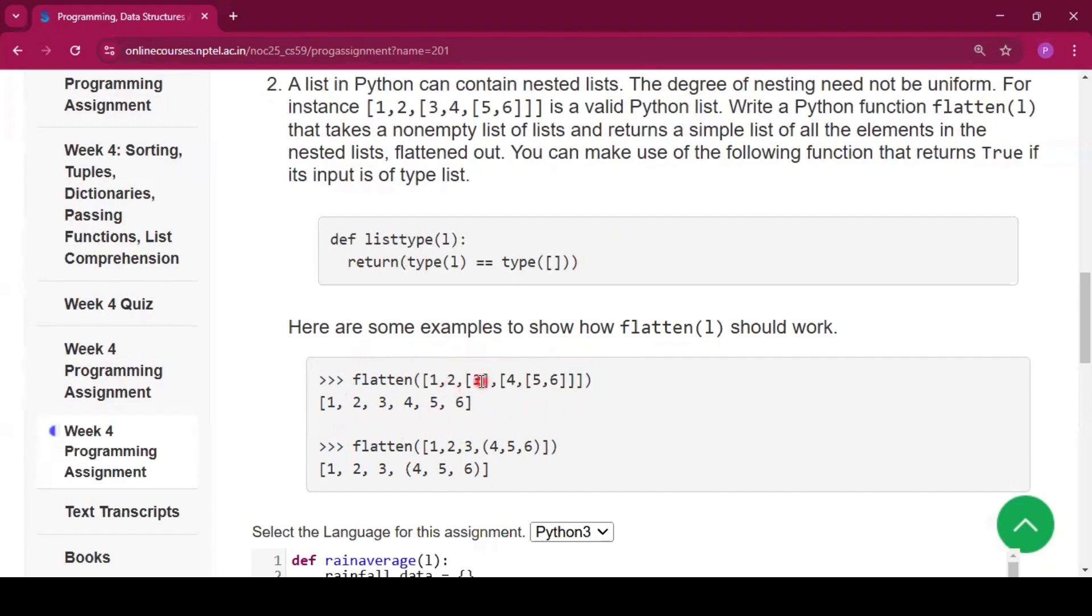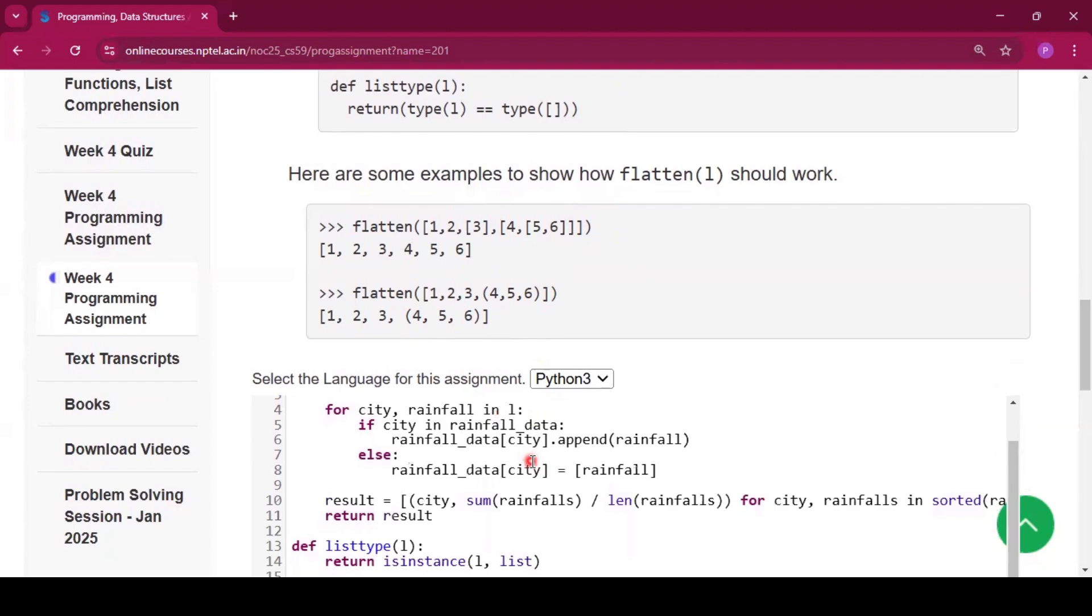Why? Because this is one individual list. That means [3] is one individual list. [[4, [5, 6]]] is another list. Now [5, 6] is another list. So we have to remove those third brackets or square brackets and we have to return the list. Now I will write two functions.